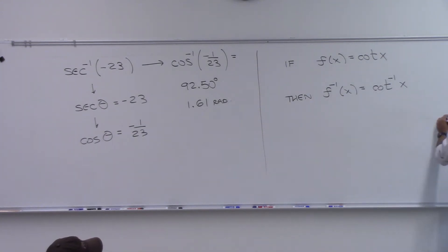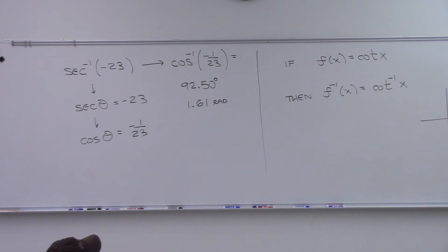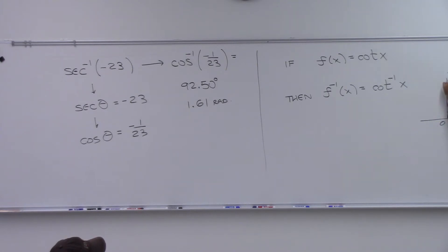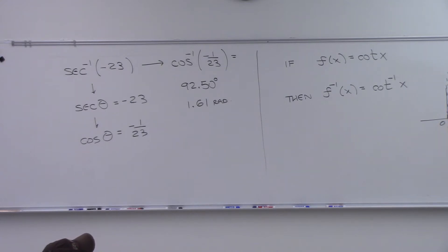Let's graph cotangent x. It has a vertical asymptote at 0, π is here, π/2 is in the middle, and the graph goes like this. So if we look at just the piece between 0 and π...